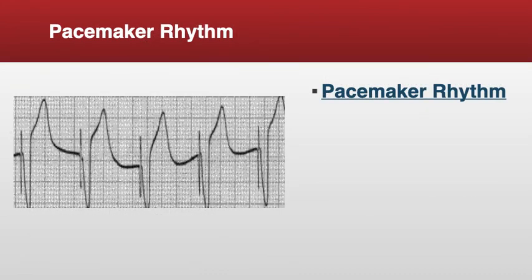On the left is a sample EKG of what a pacemaker rhythm may look like. The characteristic very long, thin spike in front of the QRS is called a pacemaker spike, and it's pretty consistent with a permanent pacemaker. This is the type of rhythm you may see on a client with a pacemaker.